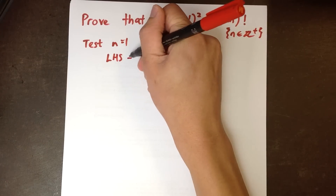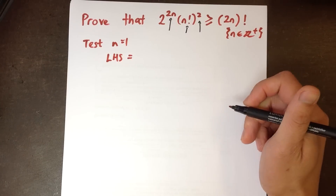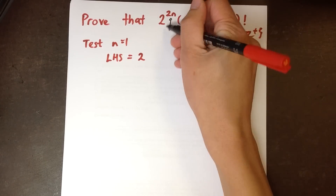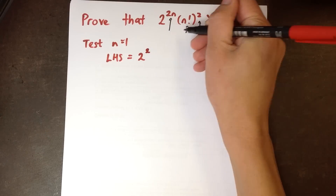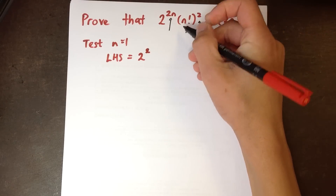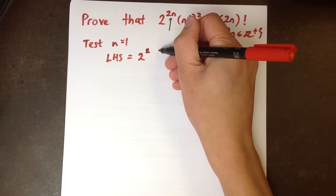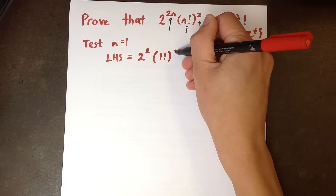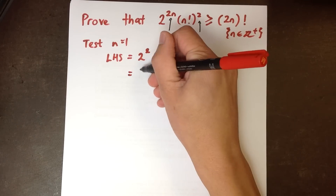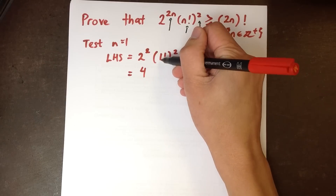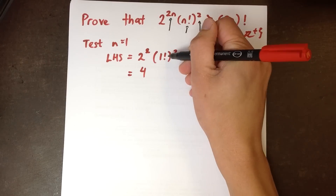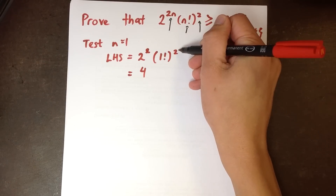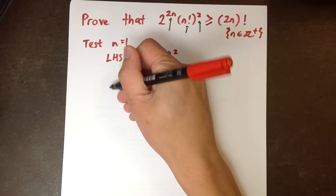The left-hand side in this case, even just evaluating it, is pretty gross. You've got 2 to the power of 2 times 1, which is just 2. Then you've got 1 factorial squared. That's 4 — 2 squared is 4. 1 factorial is just 1, and 1 squared is also 1, so it's just 4.